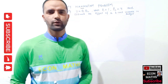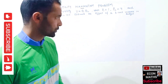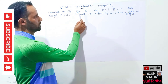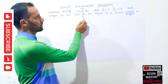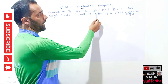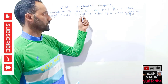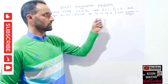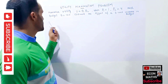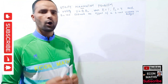Hi, this is Hilal. In this video we will solve a problem on utility maximization. The utility function is given as U = q1 times q2. The price of good one is one dollar and the price of q2 is four dollars, and the total budget for the consumer is 120 dollars.